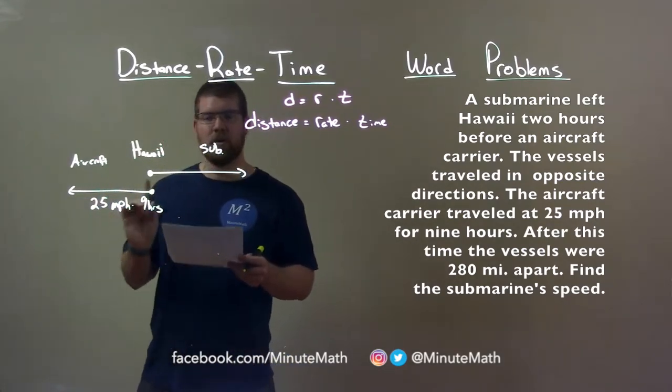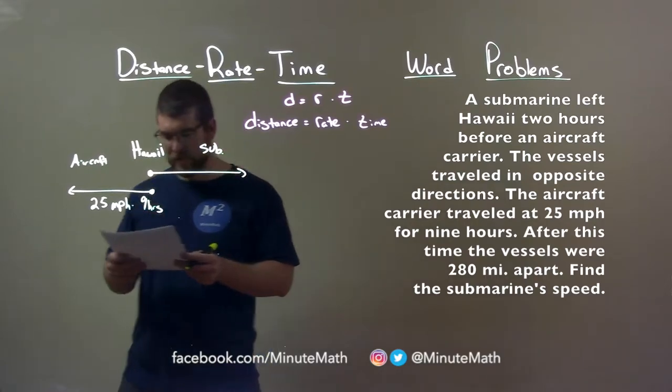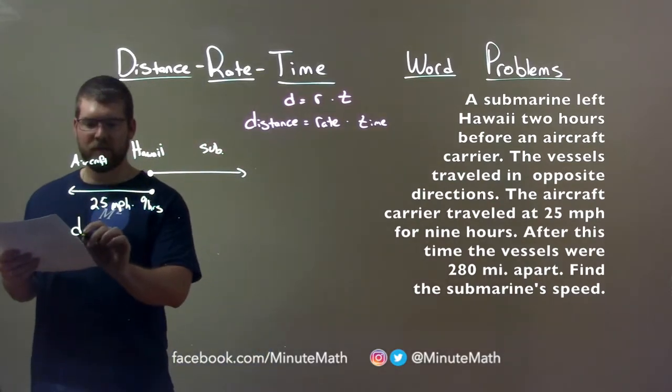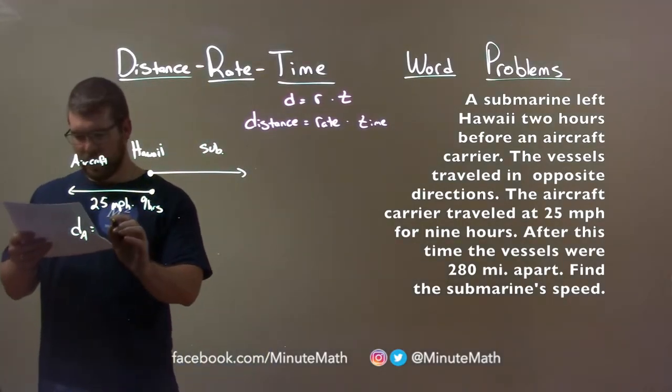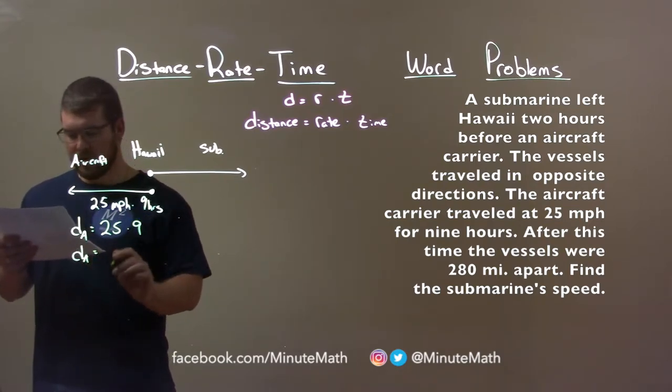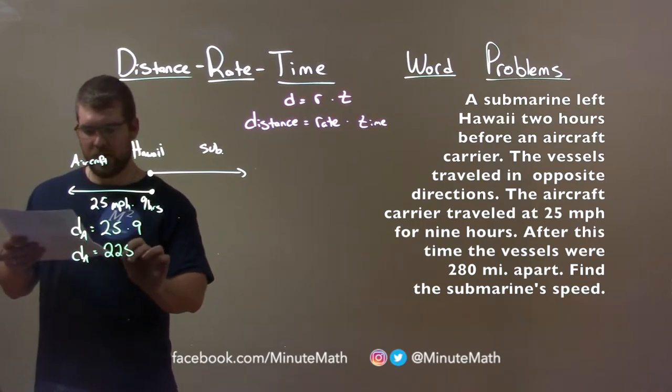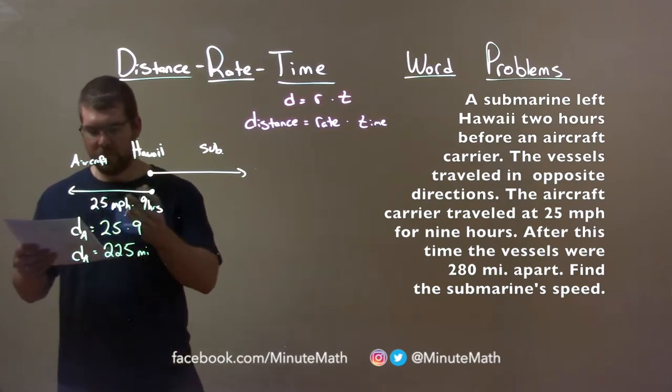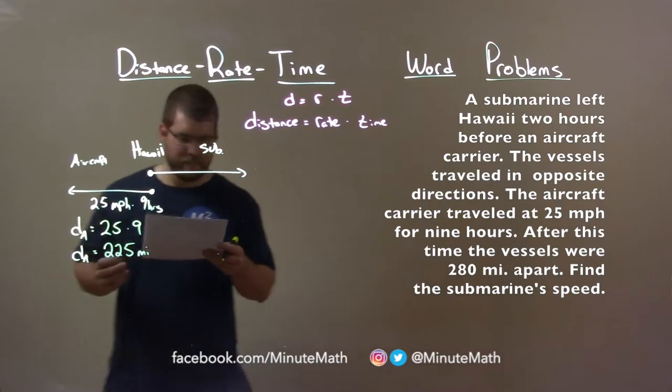So let's find the distance that the aircraft carrier actually traveled. The aircraft carrier's distance is 25 times 9. So the distance of the aircraft carrier is 225 miles. And that's how far it traveled at that time.